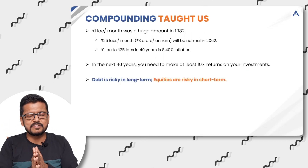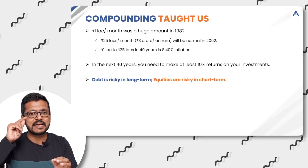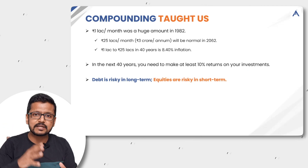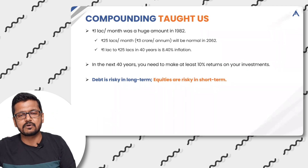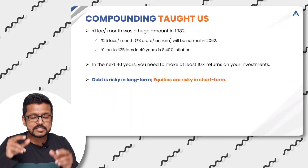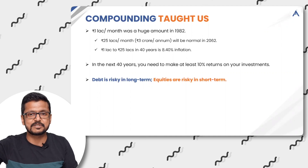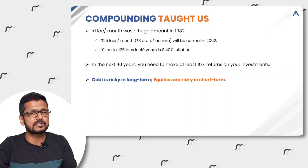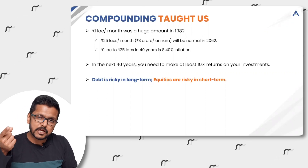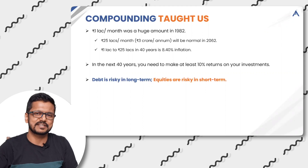I always tell my investors and participants: debt is risky in the long term and equity is risky in the short term — and we do exactly the opposite. Debt being risky in the long term doesn't mean losing your capital; it means it is not beating inflation. It looks safe right now, but if you do long-term investments in debt — insurance, PPF, Sukanya Samriddhi Yojana — it is risky because it is eroding your wealth. Equity is meant for the long term and we use it for the short term.